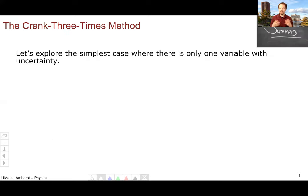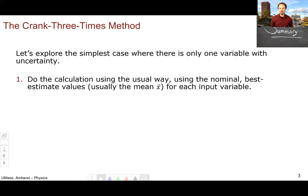Let's explore how to implement the crank three times method for the simplest case where there is only one variable in our calculation with any uncertainty. Step one is you do the calculation in the usual way, using your nominal best estimate values, usually the mean for each input variable.